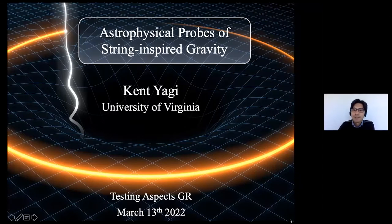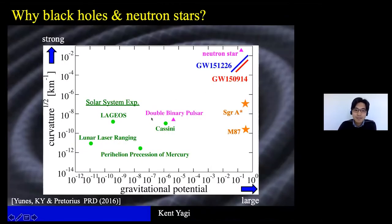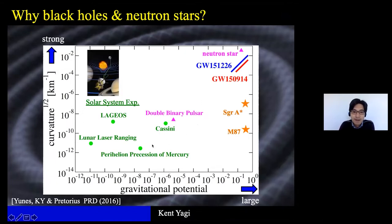Thank you very much for inviting me to this great workshop. Today I'd like to explain what we can learn about gravitational aspects using astrophysical objects, namely black holes and neutron stars, mainly focusing on gravitational wave observations. I'd like to begin by showing this plot. On the x-axis it shows the amount of gravitational potential, and on the y-axis it shows the amount of curvature for systems that have been used for gravity tests. Solar system experiments have done precise measurements and carried out tests of GR, but they lie in the bottom left corner, meaning we can only approach the somewhat weak-field aspect of gravity because our sun is not compact enough.